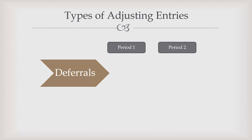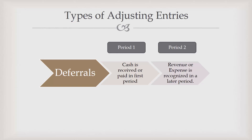In review, deferrals happen when cash is received or paid in the first period, and then we recognize the revenue or expense in a later period. Generally with deferrals, you have one journal entry that occurred in period one, and then the adjusting journal entry occurs in period two. Be sure to check out my other videos on why we do adjusting entries and the accruals as well.